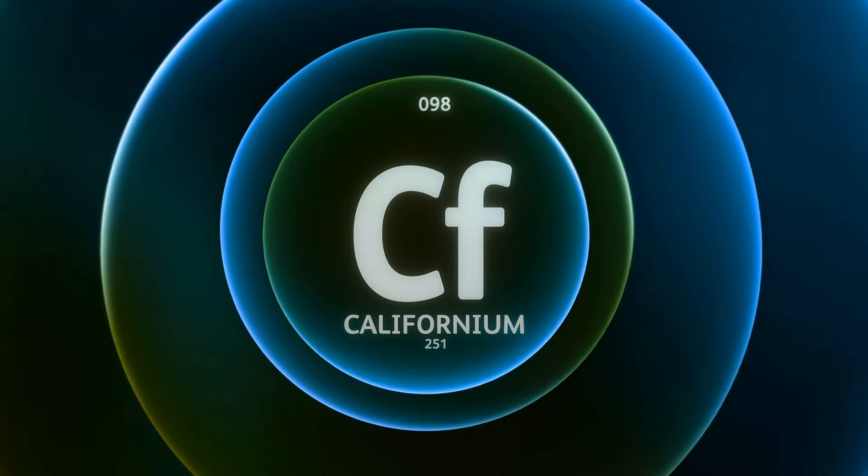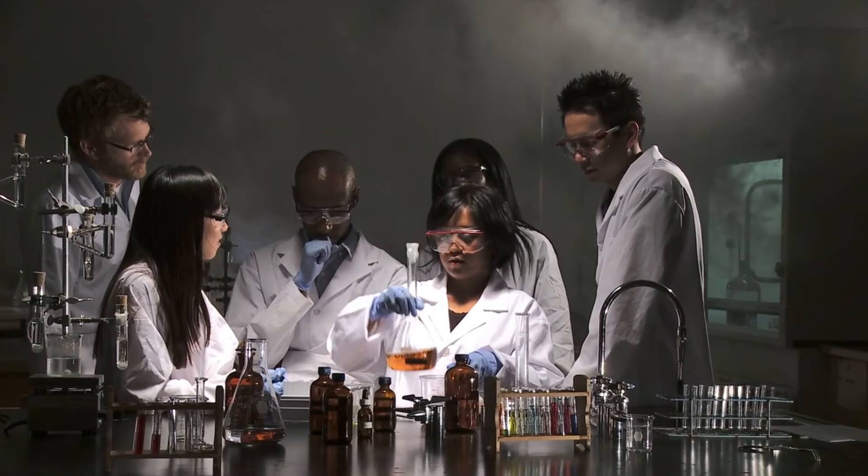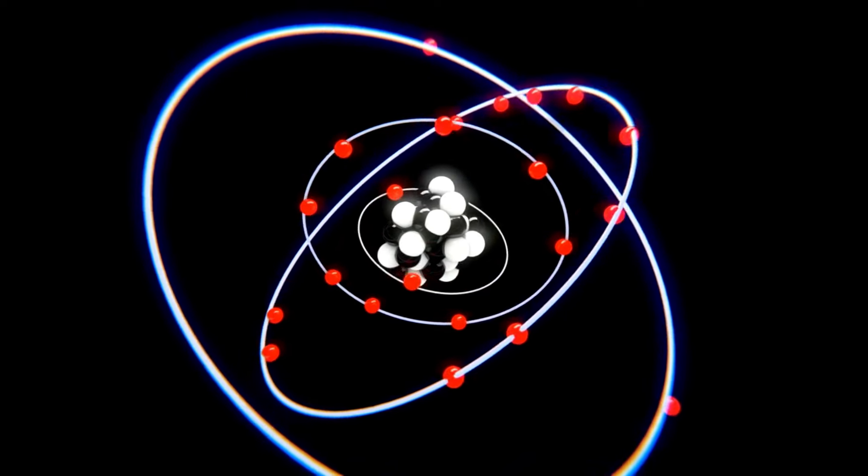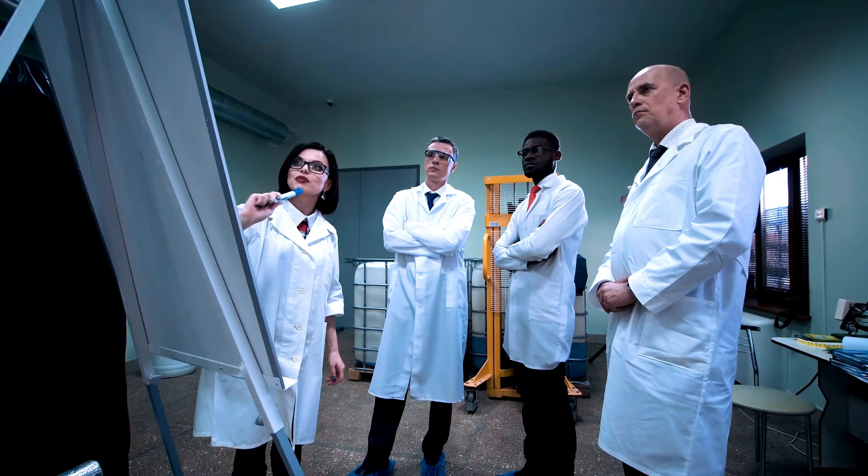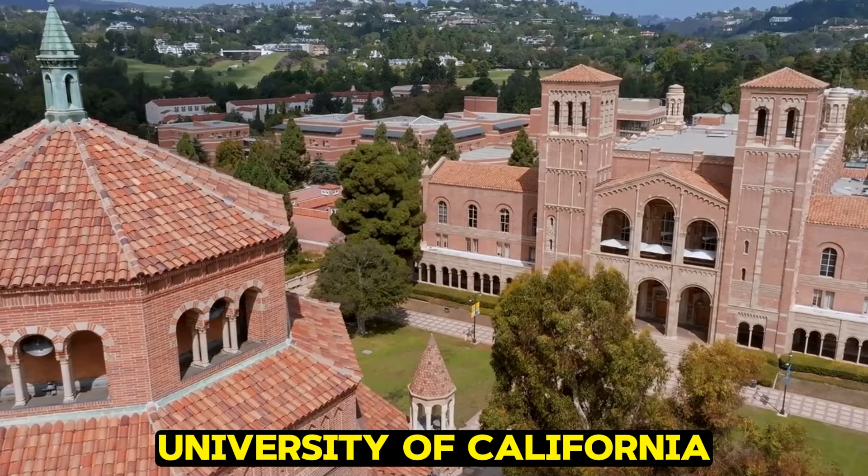Californium 98, an isotope of Californium, has an intriguing history marked by its discovery in the early 1950s. The element Californium itself was first synthesized in 1950 by a team led by Albert Ghiorso and Glenn T. Seaborg at the University of California, Berkeley.